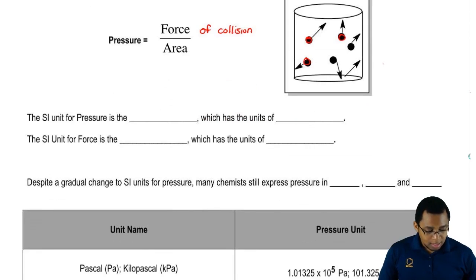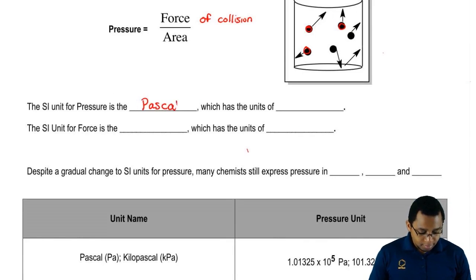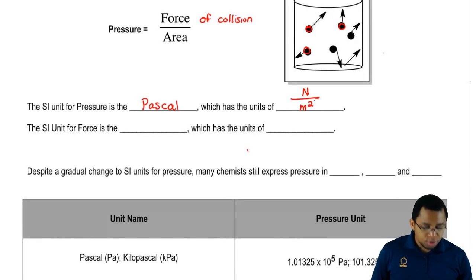We're going to say here that the SI unit for pressure, when we talk about pressure, is the Pascal. The Pascal has units of Newtons per meters squared.